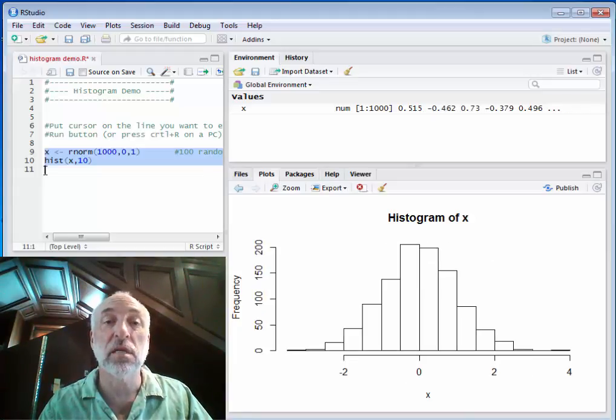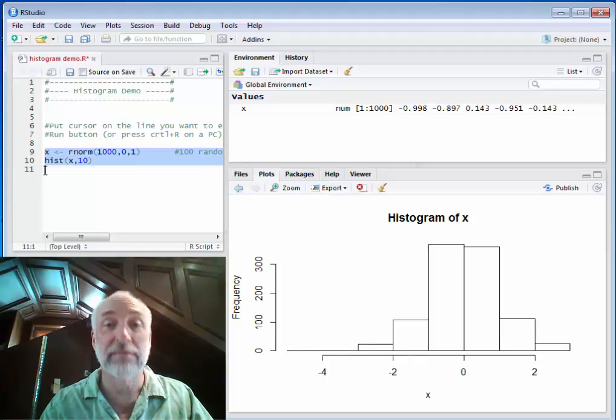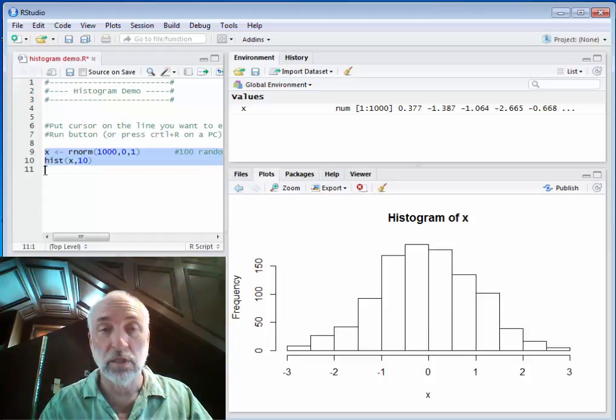Histograms work a lot better if you have a lot of data. If you don't have much data, then they start getting much more random.